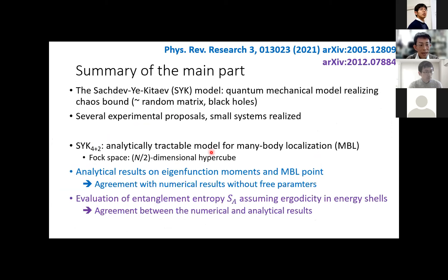To summarize the part of the talk so far: we have studied many-body localization as localization phenomena in the Fock space, using the SYK model as a tractable system. We identified four regions in terms of the strength of the SYK2 perturbation term, and analytical estimates of IPR and spectral statistics were compared against numerical results without any fitting parameters. Deep inside the third regime, where localization rapidly progresses, the spectral level statistics start to deviate from GUE — corresponding to chaos — and approach the Poisson distribution without level correlation.